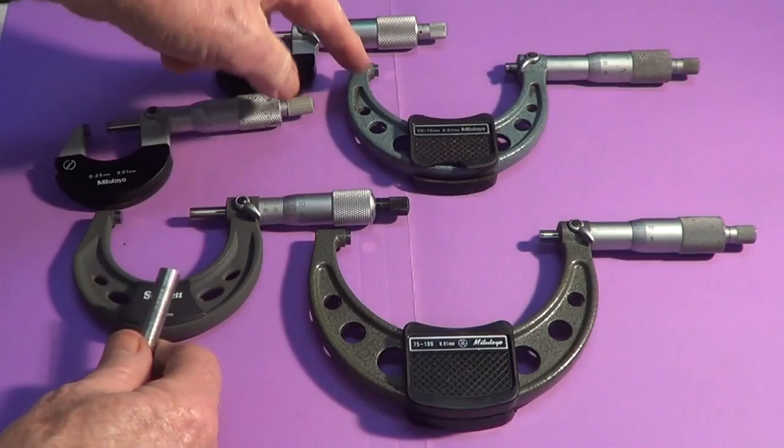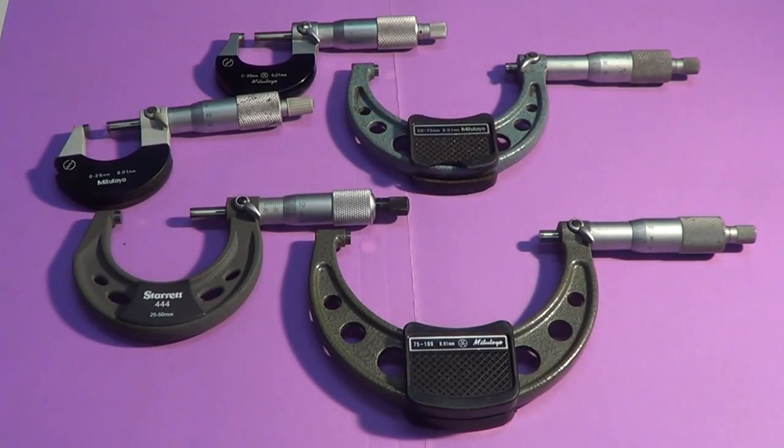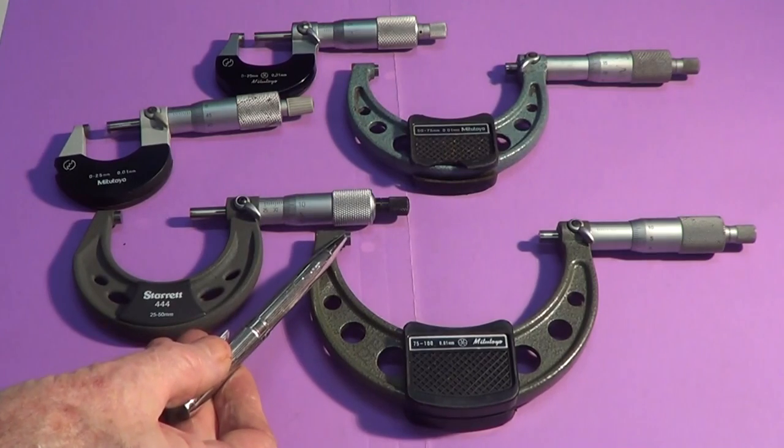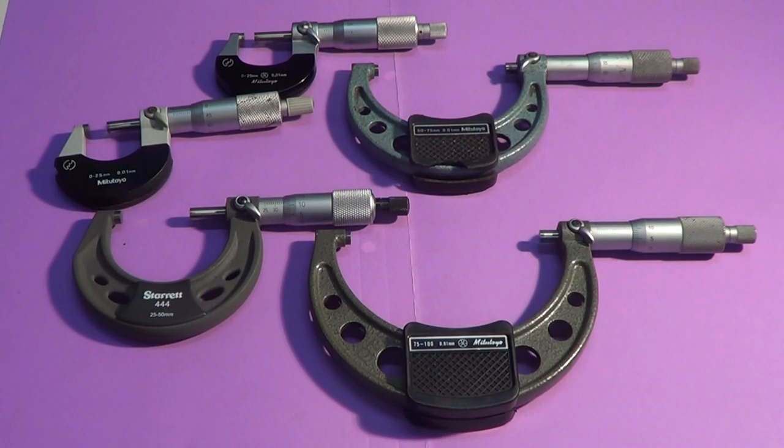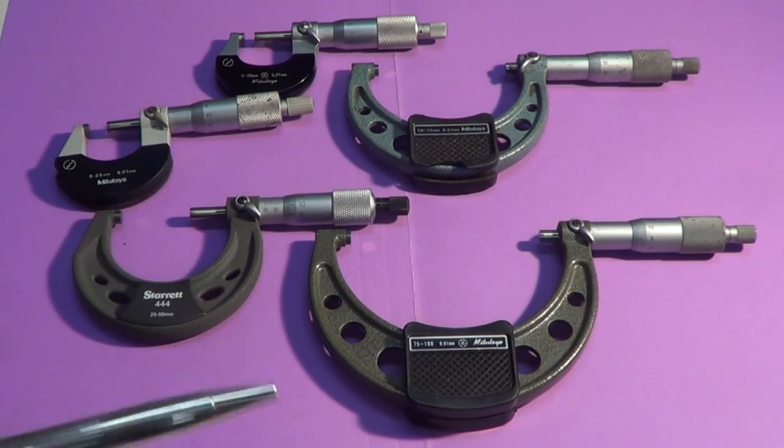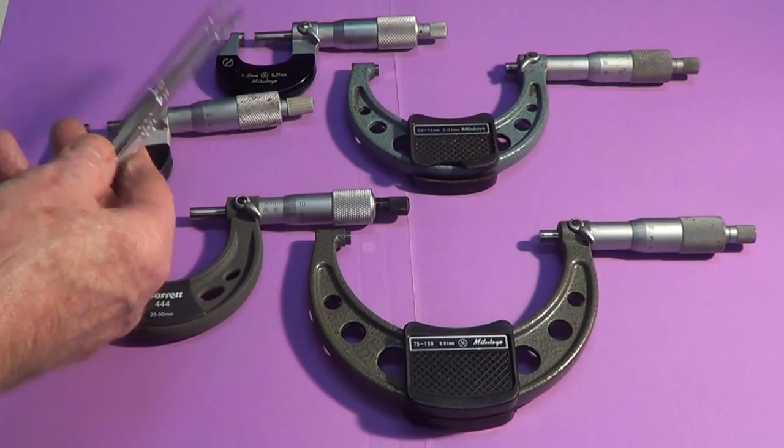Micrometers come in sets. You get zero to 25, 25 to 50, 50 to 75, and then 75 up to 100. You can also get right up to 150 millimeters, which would be a standard workshop set of micrometers.